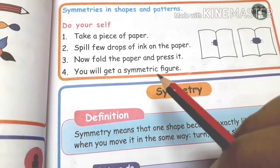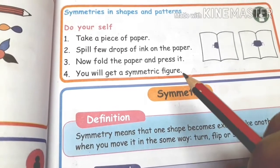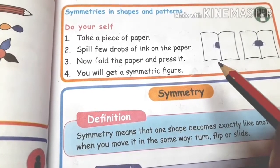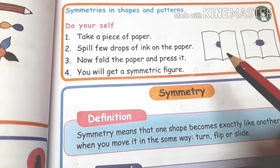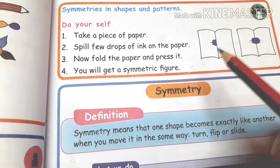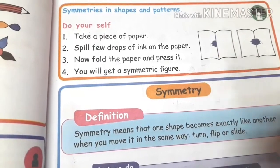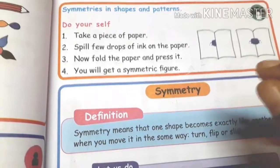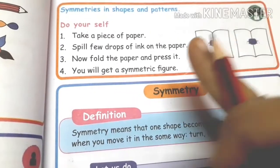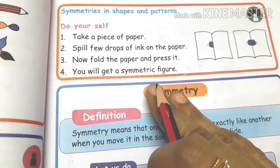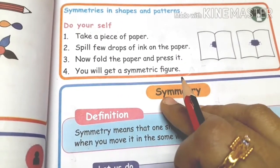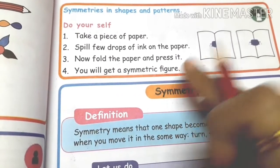You will get a symmetric figure. Spill a few drops of ink on the paper, fold the paper, and press it. If you fold the paper, you will get a symmetric figure.